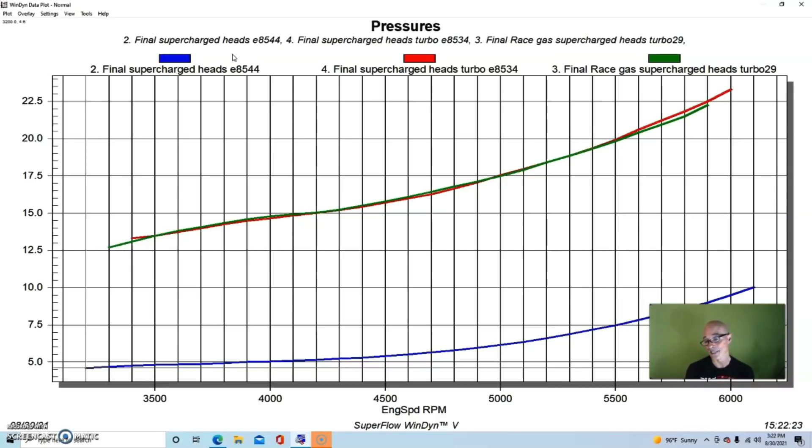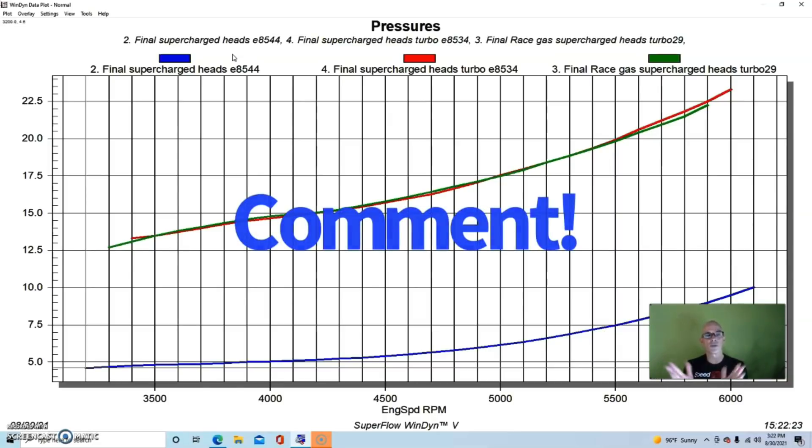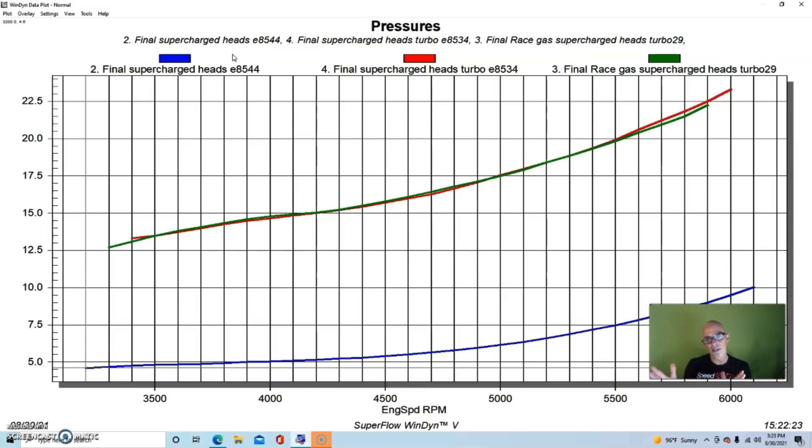So we jumped up from 10 pounds, and actually a little under 10 pounds at 6000, up to 23.3 pounds with the compound setup. Remember we had the turbo wastegated with the spring and the wastegate set for seven pounds, so we're assuming that the turbo is supplying seven pounds between the turbo and the blower. And I know guys are going to comment about that, and I want you to tell me what you think.